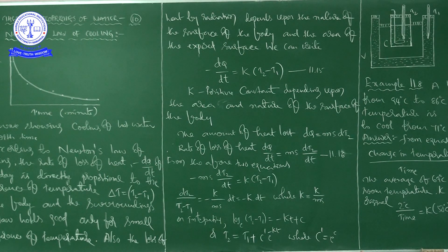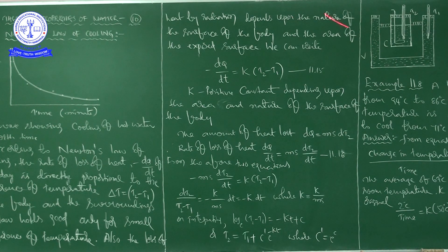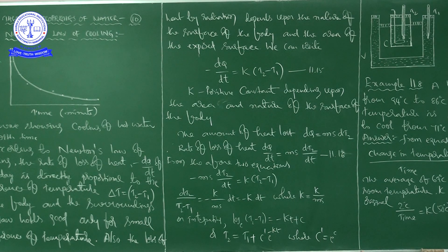Continue to note the temperature T2 of the water until it attains a temperature about 5 degrees centigrade above that of the surroundings. So we note down the time taken to decrease the temperature from T1 to T2, where T2 is just 5 degrees centigrade more than the temperature of the surroundings. Then we are going to plot a graph.